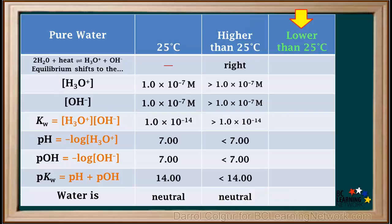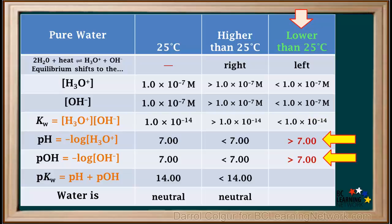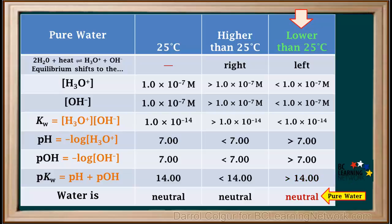We can now determine the ranges of these quantities if the temperature is lowered below 25°C. Decreasing the temperature causes the ionization equilibrium to shift to the left, causing both hydronium and hydroxide ion concentrations to fall below 1 × 10⁻⁷ M. Their product Kw falls below 1 × 10⁻¹⁴. Because both concentrations are less than 1 × 10⁻⁷, the pH and pOH are both greater than 7, and pKw is greater than 14. Again, pure water remains neutral no matter what the temperature is.